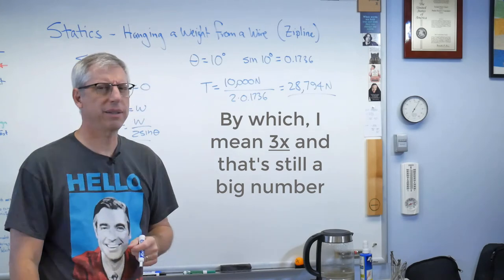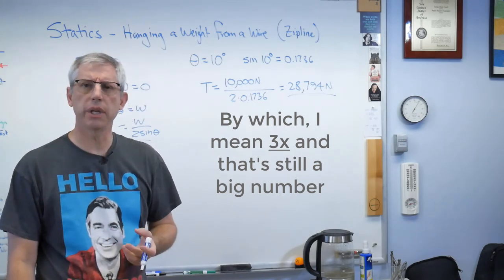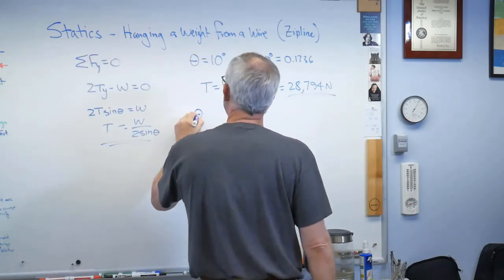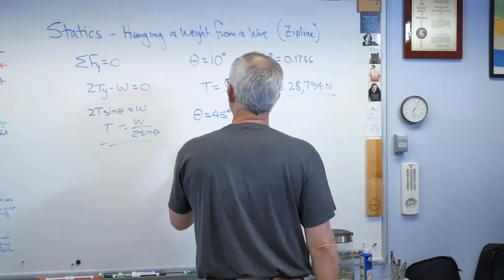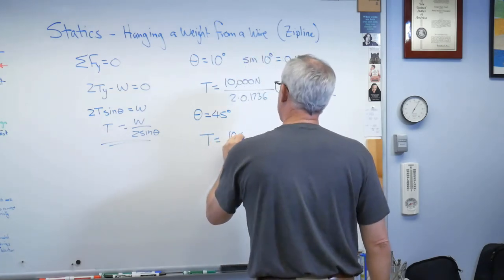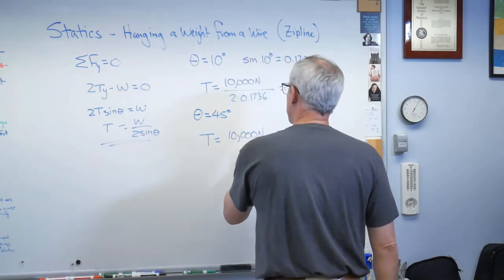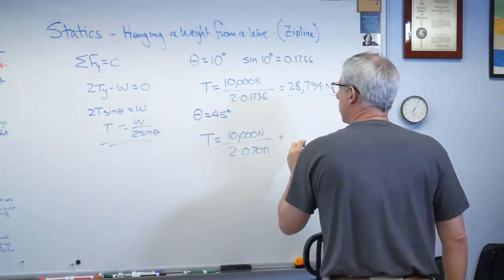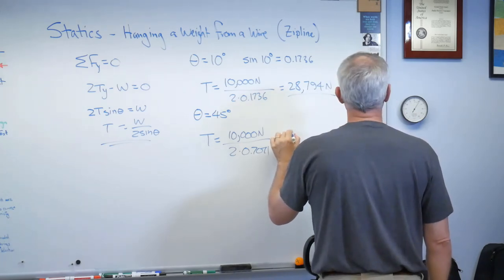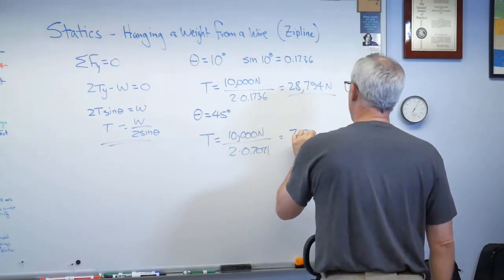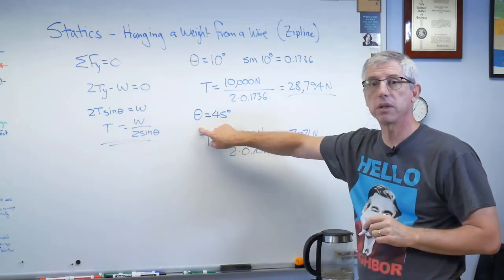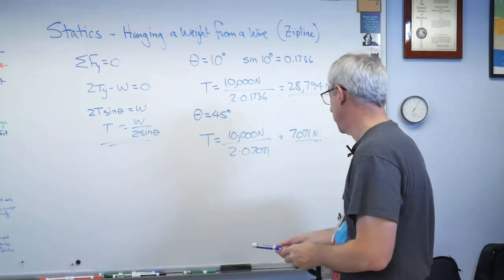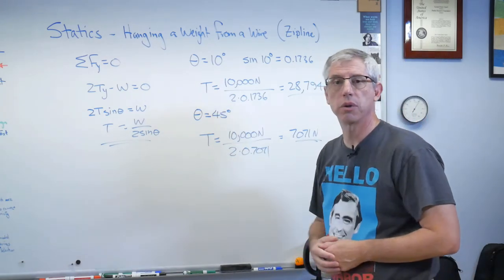That seems like a lot of tension. How do I reduce the tension? What if I make the angle larger? What if theta equals 45 degrees? Then t is 10,000 newtons over 2 times 0.7071, and that's going to give me 7,071 newtons. So at 45 degrees, the tension in the wire can actually be a little less than the weight of the weight we're trying to lift.